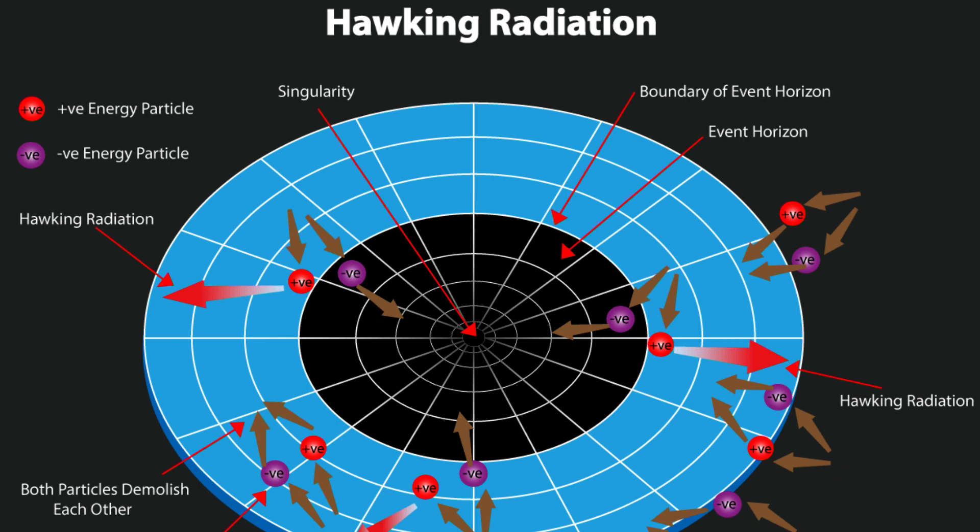The emission of radiation effectively causes the black hole to slowly evaporate. This is in contrast to classical physics, where nothing, not even light, can escape from a black hole.